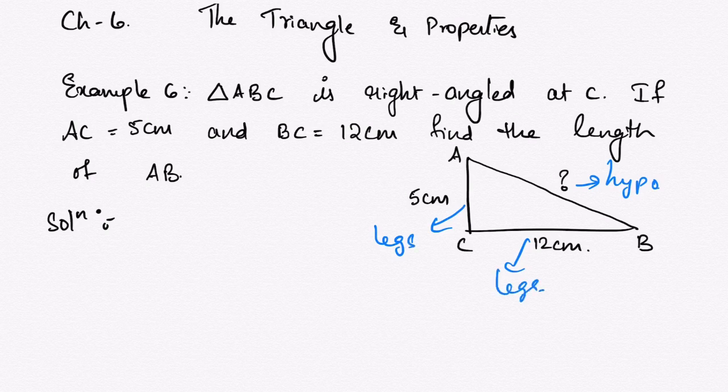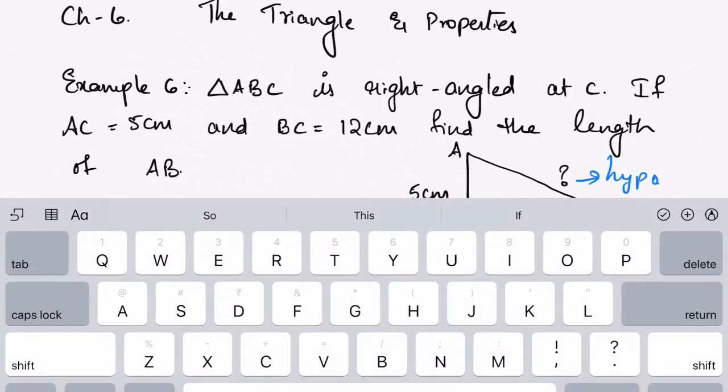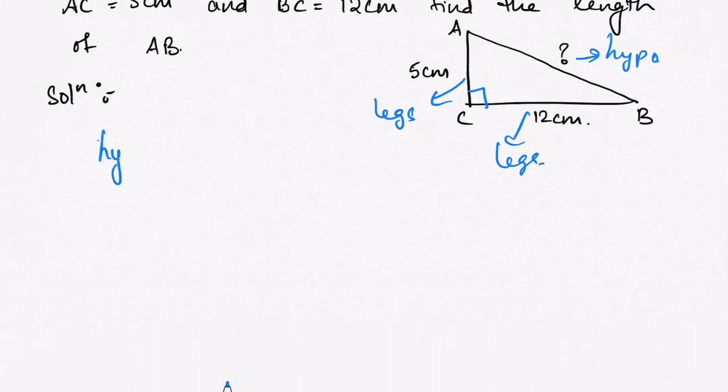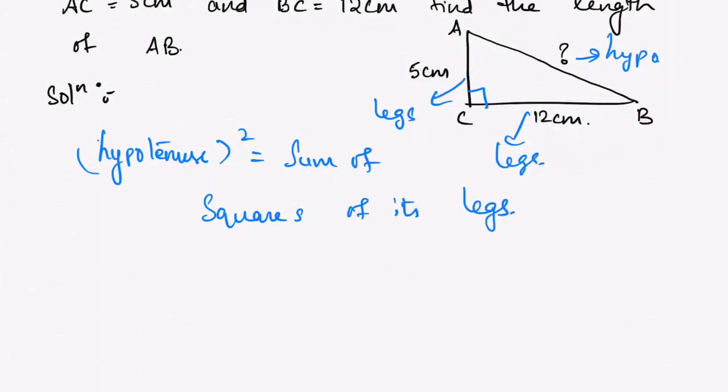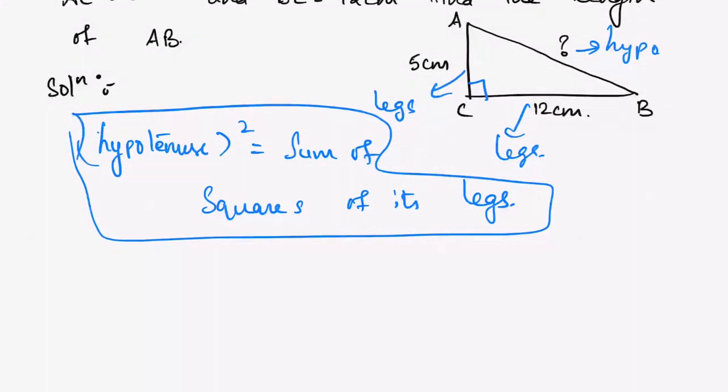What is the property of right-angled triangles? Pythagoras is only applicable for right-angled triangles. So we can write this as: the square of hypotenuse is equals to sum of squares of its legs. This is the Pythagoras property.